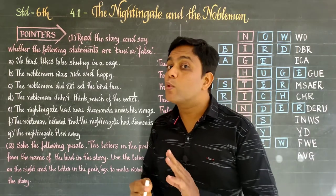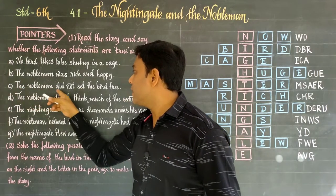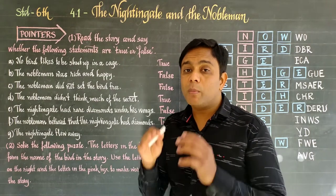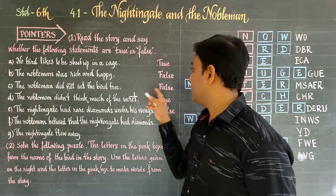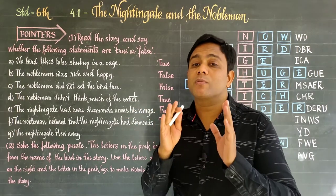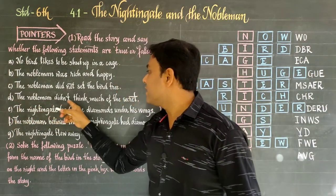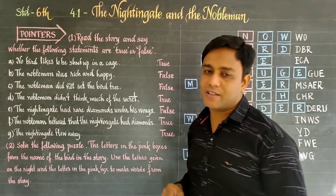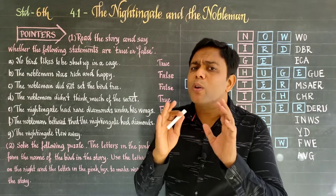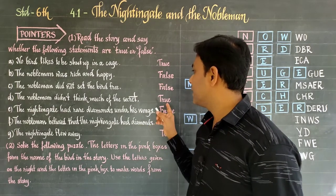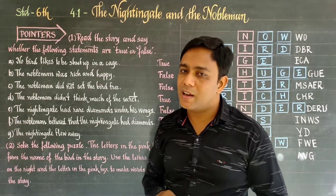Third statement: the noble man did not set the bird free. The nobleman did not allow the bird to go free. The fourth statement: the nobleman didn't think much of the secret. The nobleman did not think about or pay attention to this secret — this statement is true. He paid no attention to the advice.